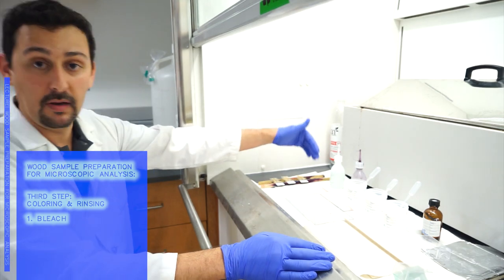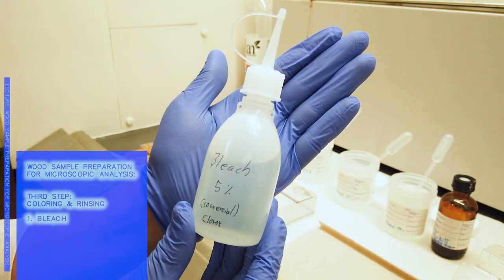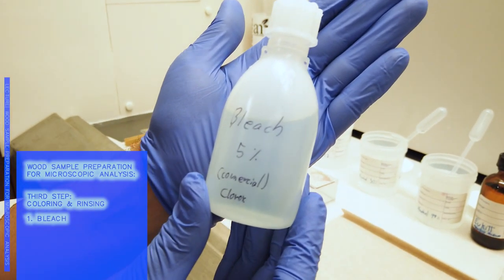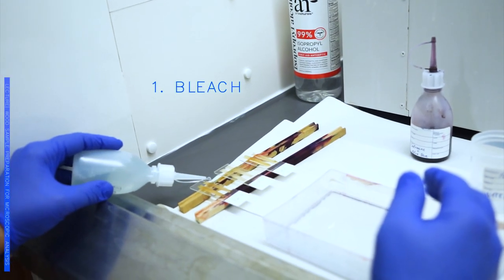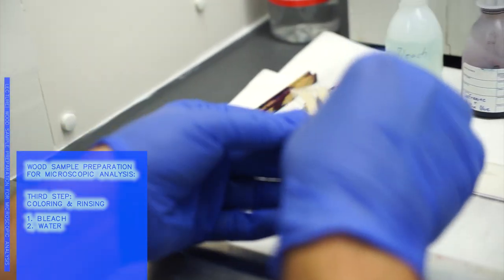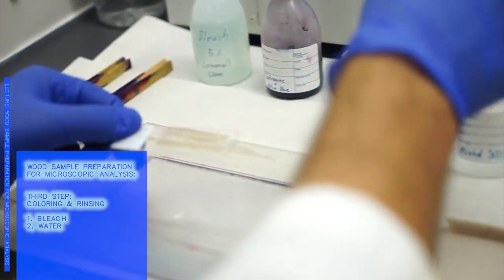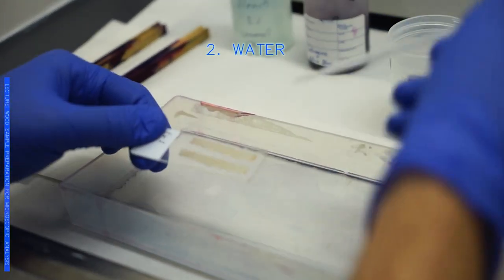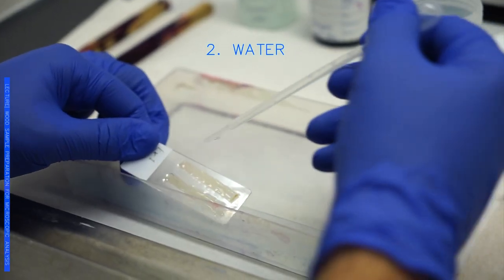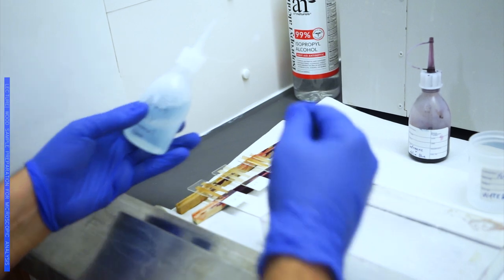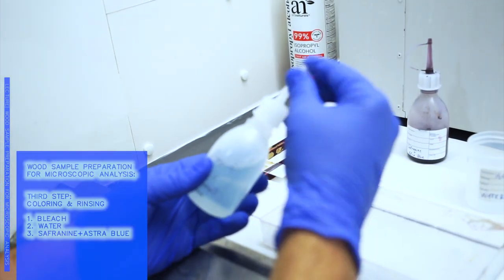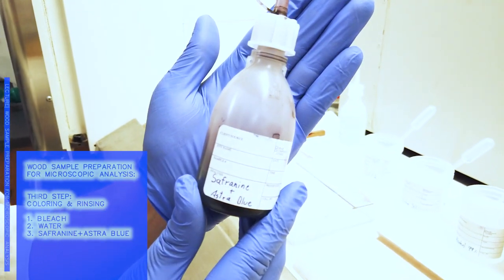First step, we will put some bleach in our samples because that will help the color to stick on our tissues. After that, we will wash out the bleach with a bit of water. Then we will go with our main colorant that we use, that is Safranine and Astro Blue. Safranine is a red colorant that will attach itself to the lignin of the wood while the Astro Blue will attach itself to the cellulose.